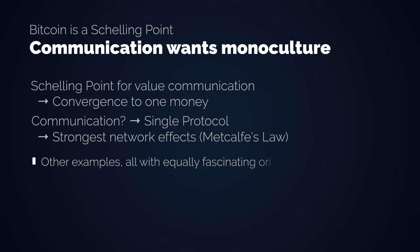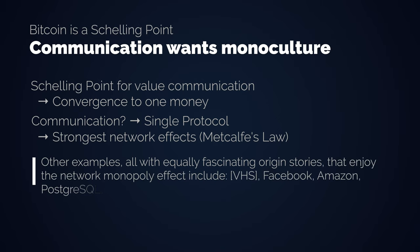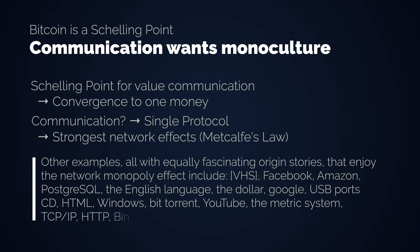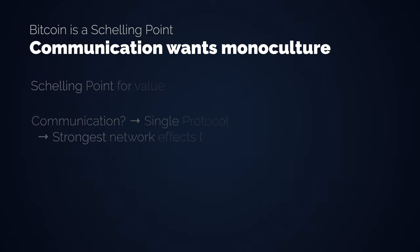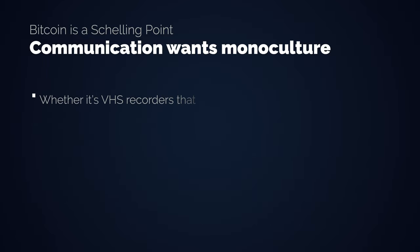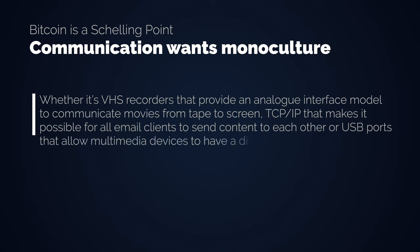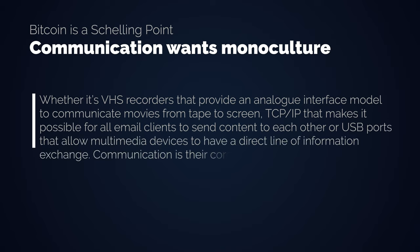Other examples with equally fascinating origin stories that enjoy the network monopoly effect include VHS, Facebook, Amazon, Postgres, the English language, the dollar, Google, and so on. There is one binding factor this broad collection of networks all share in common: they all belong to the sphere of communication — whether it's VHS recorders providing an analog interface to communicate movies from tape to screen, TCP/IP making it possible for email clients to send content to each other, or USB ports allowing multimedia devices to exchange information. Communication is their core function.